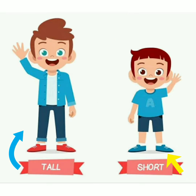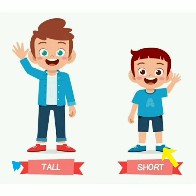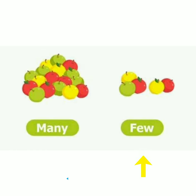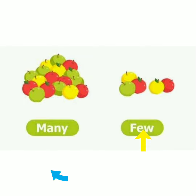Next, tall and short — yani lamba or nata. Next is many, few — yani zyada or kam, yani thoda.